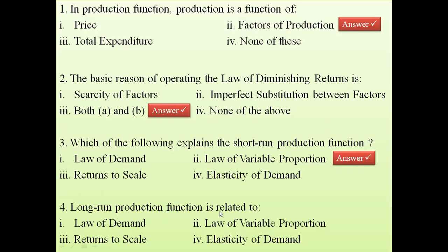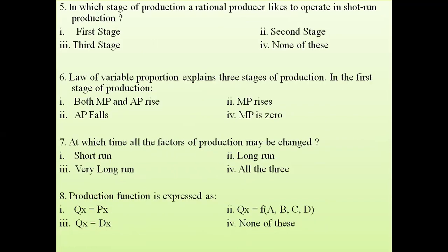Question 4: long-term production function is related to returns to scale. Question 5: in which phase of production does a rational producer like to operate in the short-term production? Whether short-term or long-term, the rational producer always likes to operate in the second stage. The reasoning behind why the second stage is rational has been fully explained in the three stages of production lecture series.